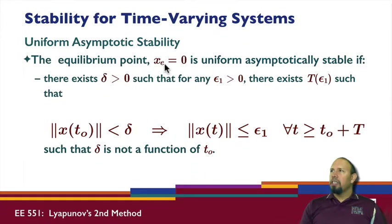Uniform asymptotic stability: the equilibrium point is uniformly asymptotically stable if there's a delta such that for any epsilon, there exists a capital T that depends upon epsilon, such that if x starts within a delta ball, then x of t will stay within an epsilon ball for t greater than or equal to t0 plus capital T.